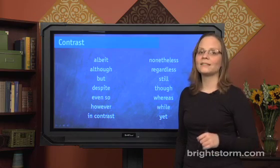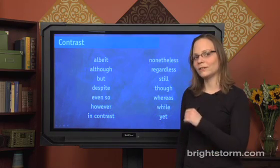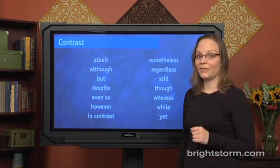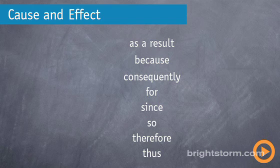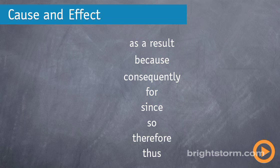There's one last category of logical coordination words to be on the lookout for: cause and effect words. These include 'as a result,' 'because,' 'consequently,' 'for,' 'since,' 'so,' 'therefore,' and 'thus.' So when you see these words, make sure that the two pieces of the sentence are being connected because one of them caused the other.